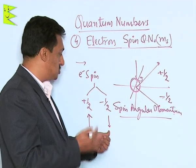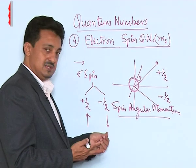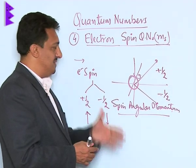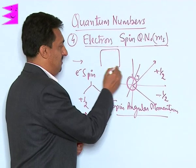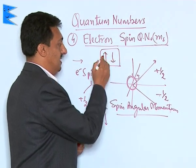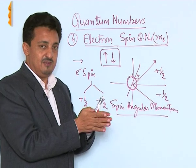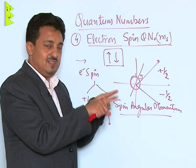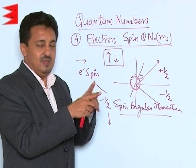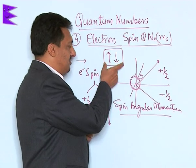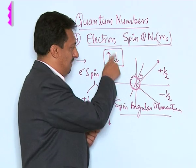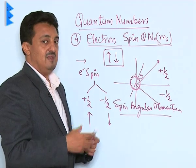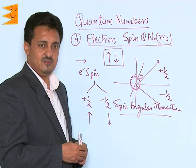Electrons have two possible spins, +1/2 and -1/2, representing the orientations of electron spin in each orbital. Since each orbital can accommodate two electrons, every line in the spectra appears as a doublet. The two electrons in an orbital must have opposite spins so their spin angular momenta cancel out. This is the importance of the fourth quantum number — it tells us there can be a maximum of two electrons in an orbital.